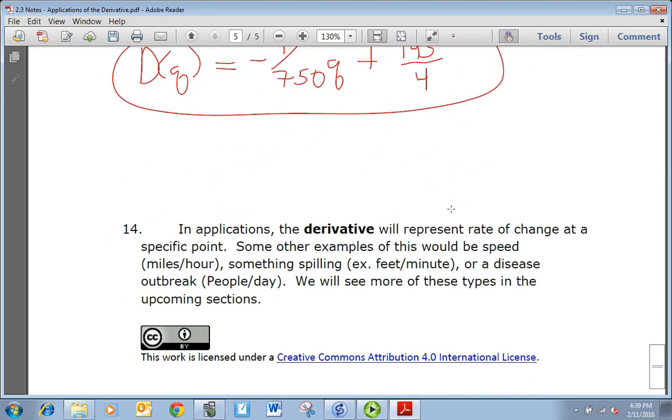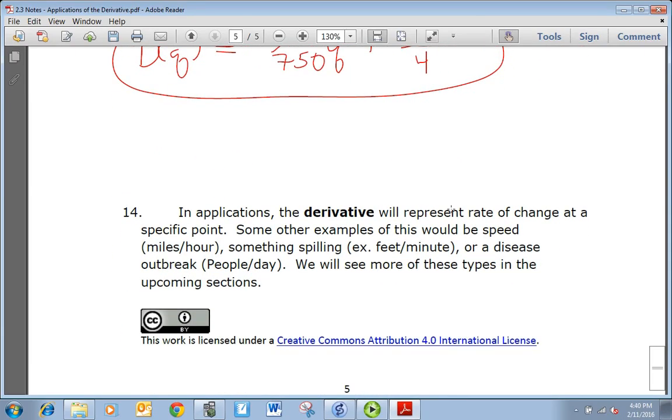Alright, in applications the derivative will represent rate of change at a specific point. Some other examples of this would be speed, something spilling, or a disease outbreak. We'll see more of these types of problems in the upcoming section.